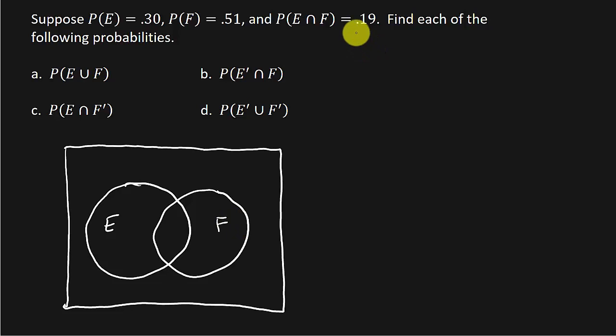So the first thing we want to do is we want to put in the intersection, the 0.19. And we know that this is 0.19. That's where they intersect. And I'll tell you what, I'm going to write the numbers in a different color so we can see.